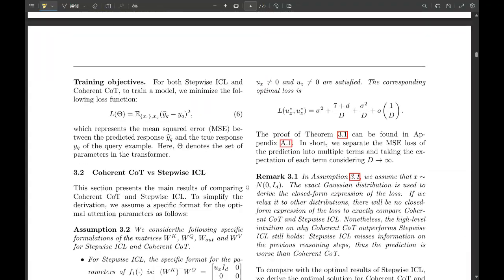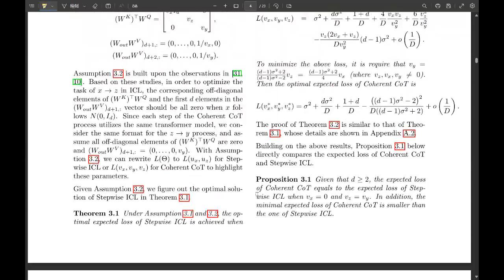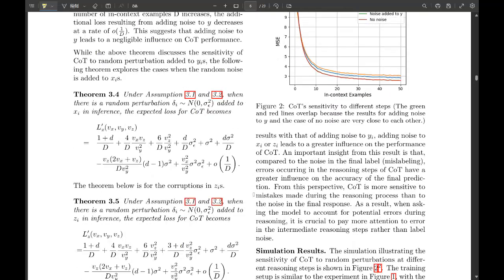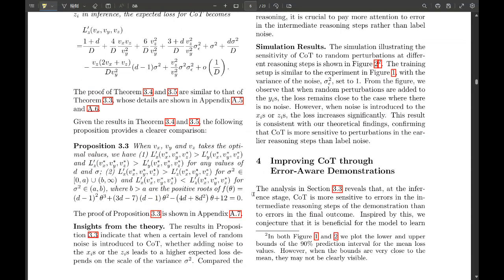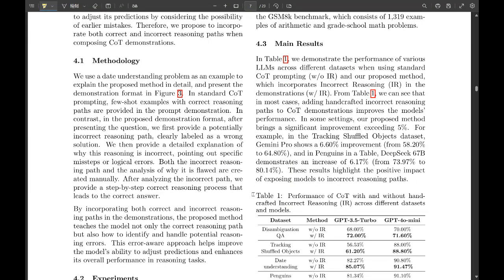So they've shown us the weak spot. But I have a feeling they didn't just leave us hanging with this potential for error. You know me too well. Right? They came up with a solution, didn't they? They did. I have to know, how do you fix something this fundamental to how the LLM thinks? Well, it's surprisingly elegant. Okay. I'm intrigued. Tell me. They call it error-aware demonstrations. And the idea is to show the LLM both correct and incorrect reasoning paths during its training.